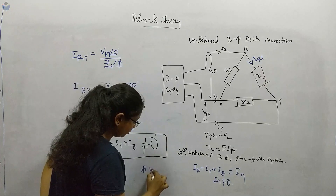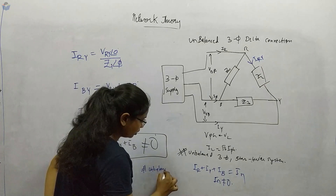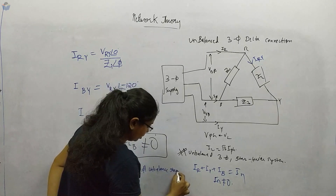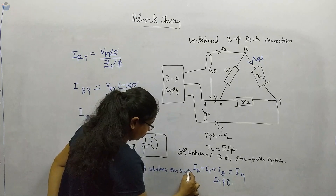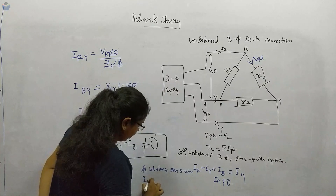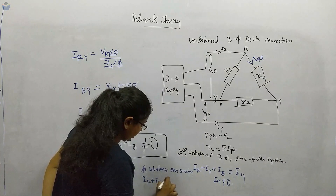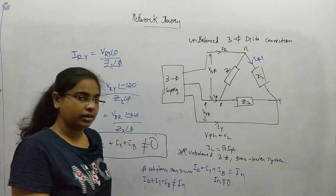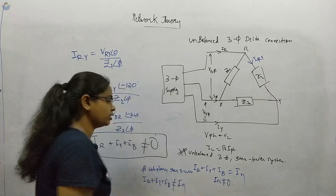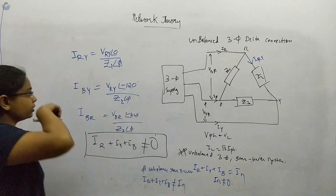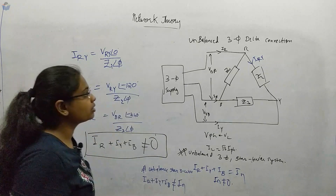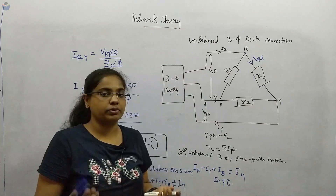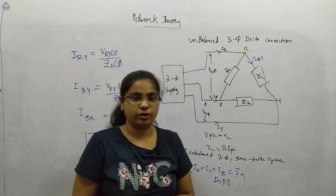For the unbalanced star three-wire system, IR plus IY plus IB is not equal to IN. Everything else remains the same; only this final equation changes. So this covers the balanced and unbalanced load types. In the next lecture, we will solve problems where the concepts will become even more clear. Thank you.